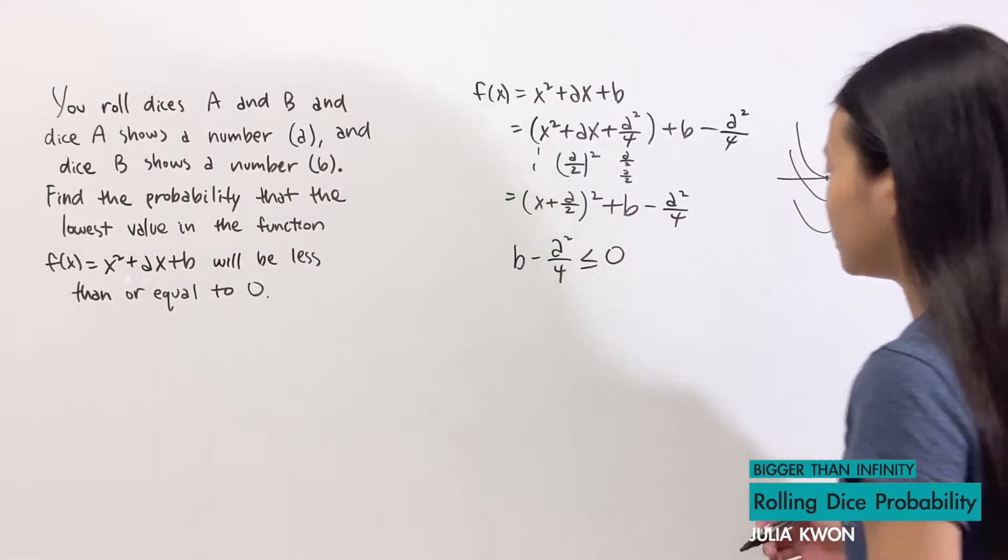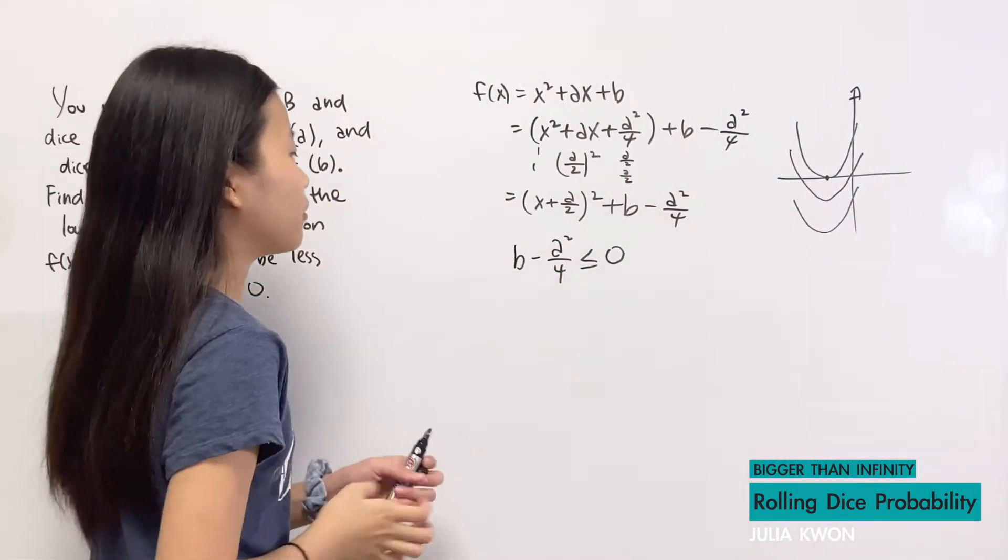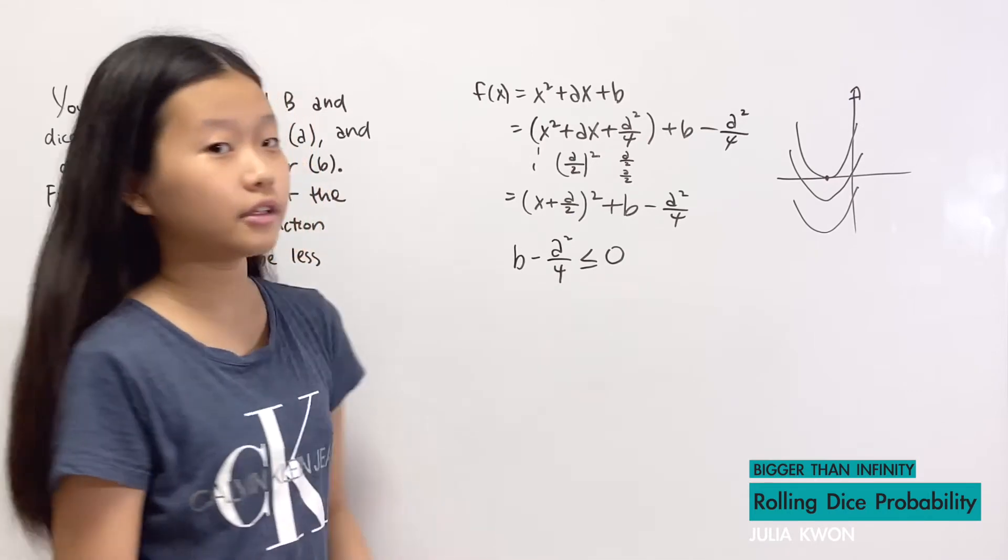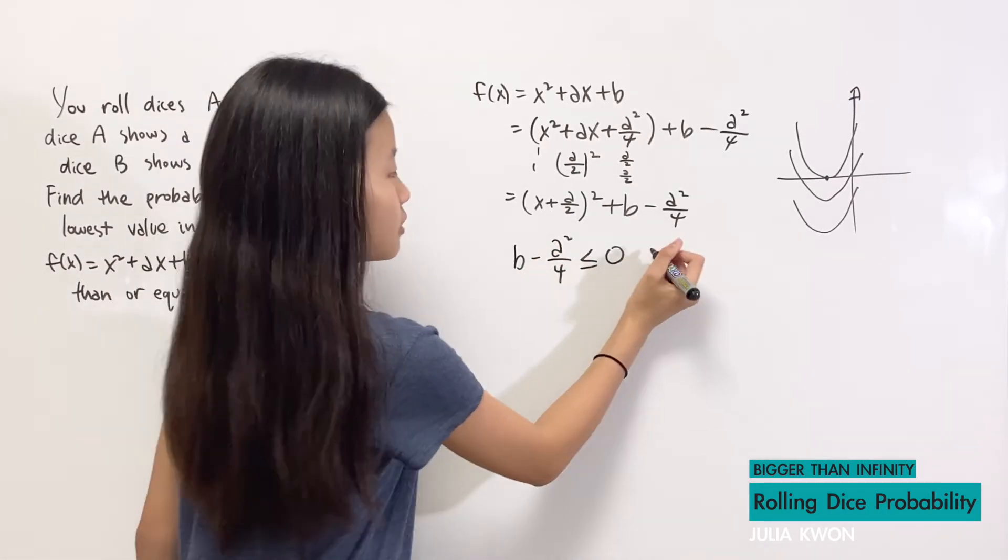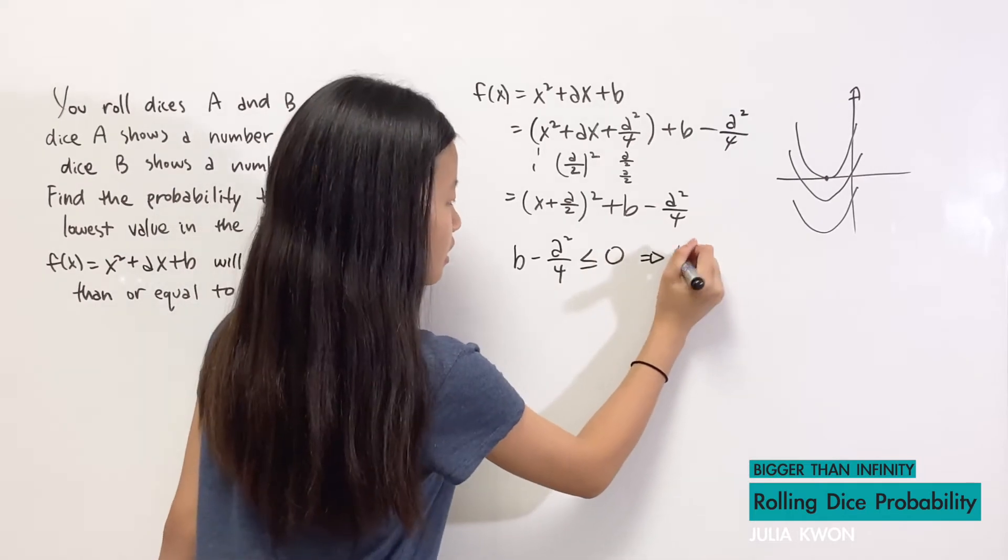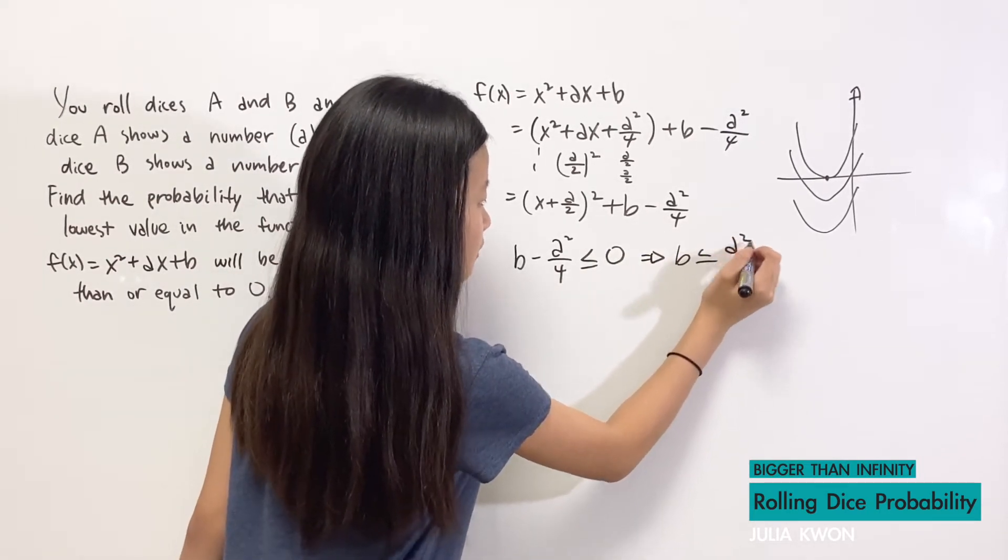And now we can solve for a and b. Well not really, but we can add a² on both sides, which will give us b is less than or equal to a² divided by 4.